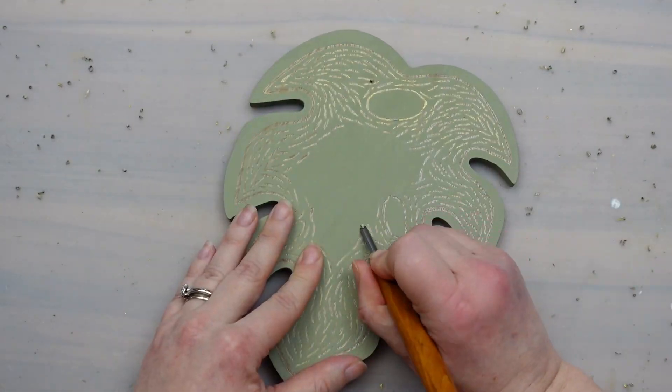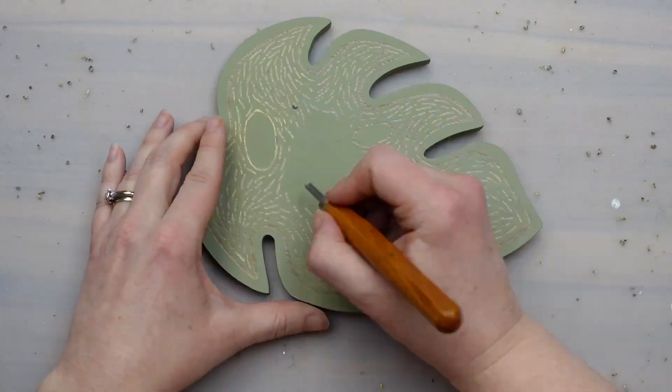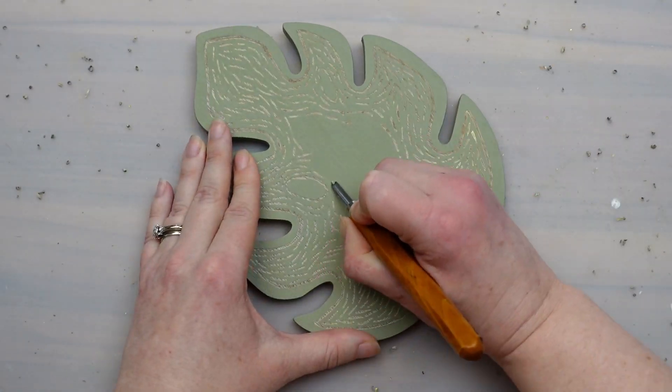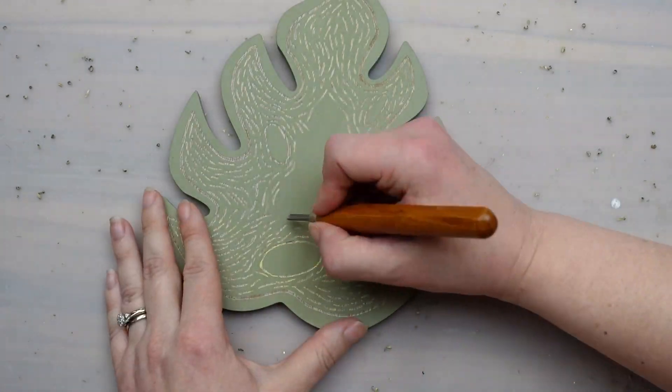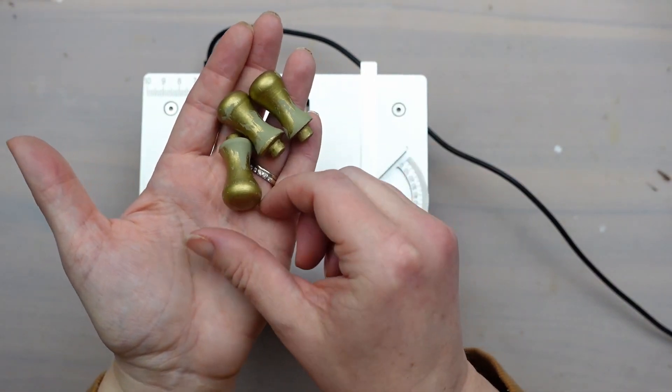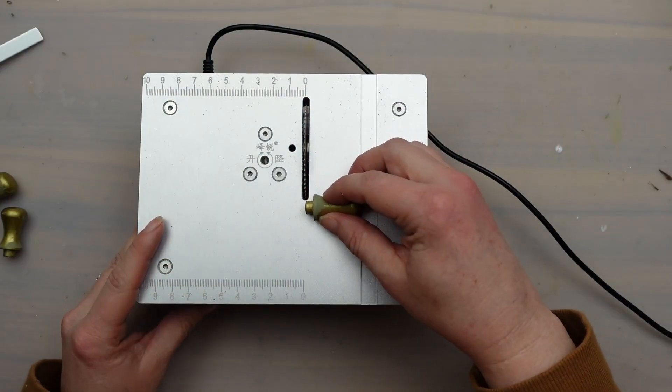I started carving out all the leaf edges first and then worked my way around the leaf and inward toward the middle. I thought that would be the best way to make it flow nicely. So I had three leaves and I was going to just hang them on the wall as a little trio, but then I decided to take one of them and turn it into a little riser.